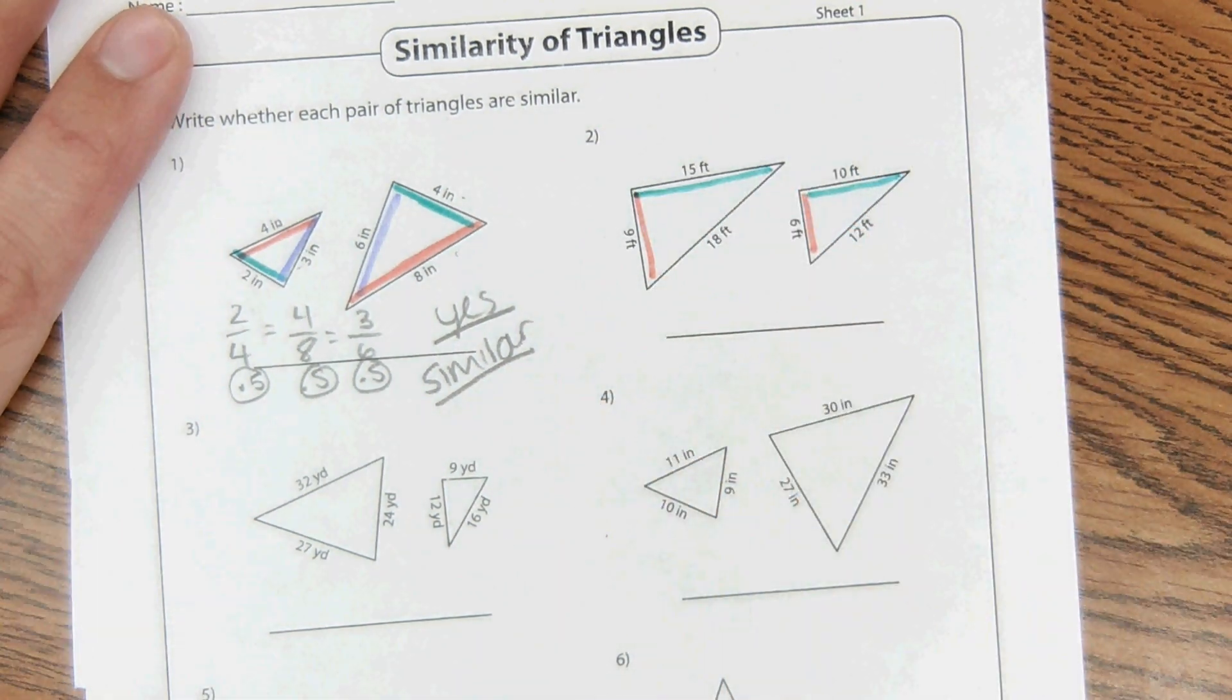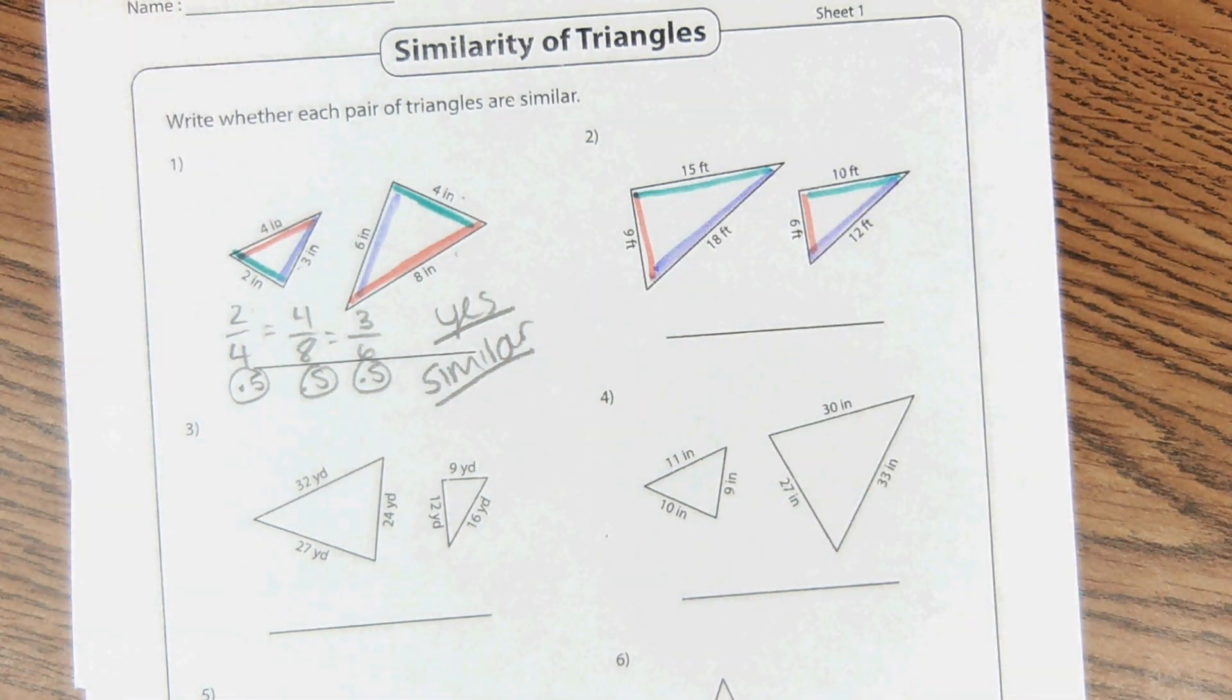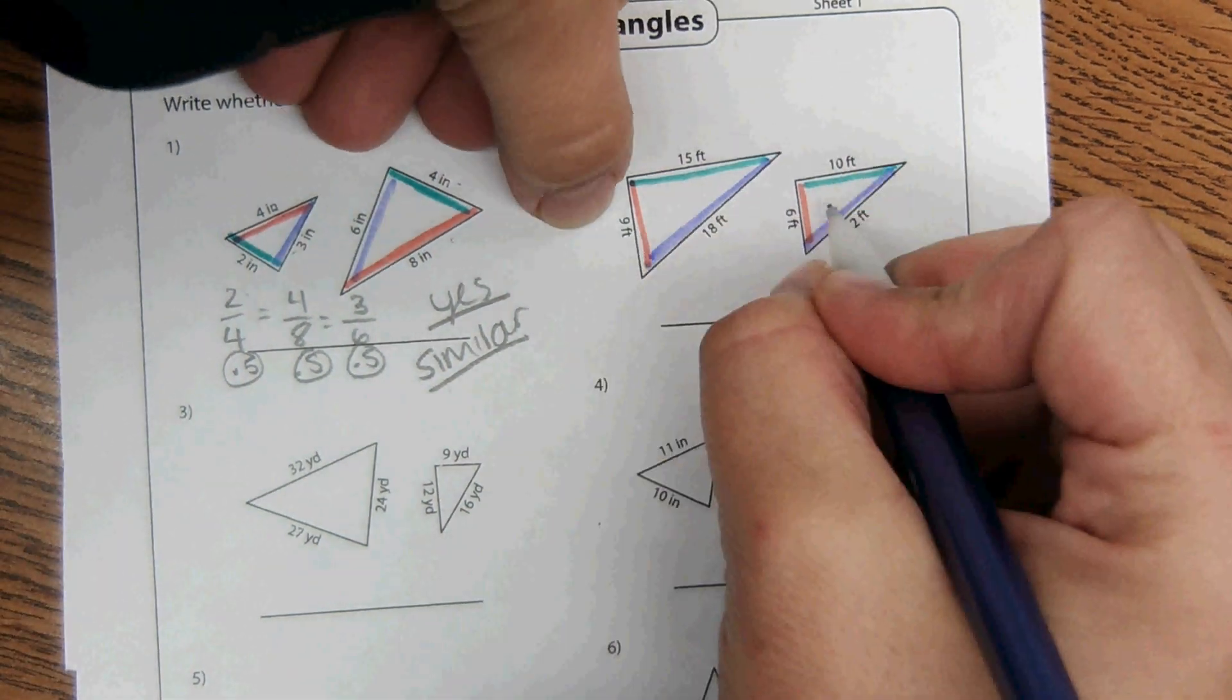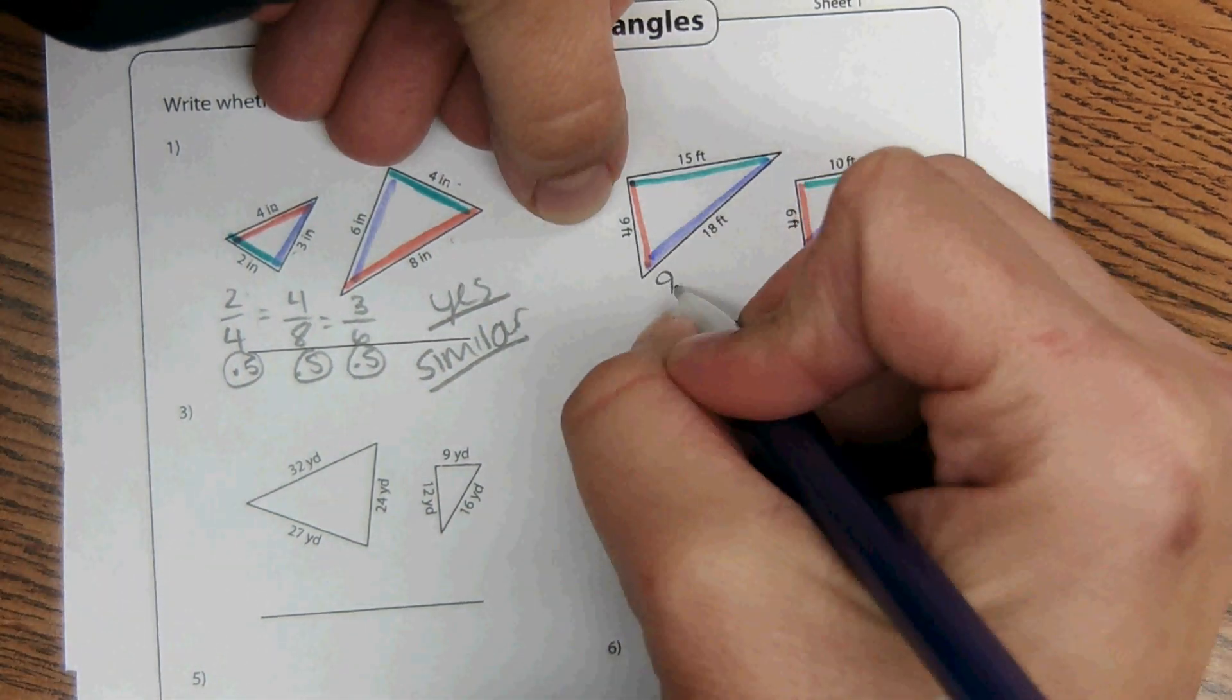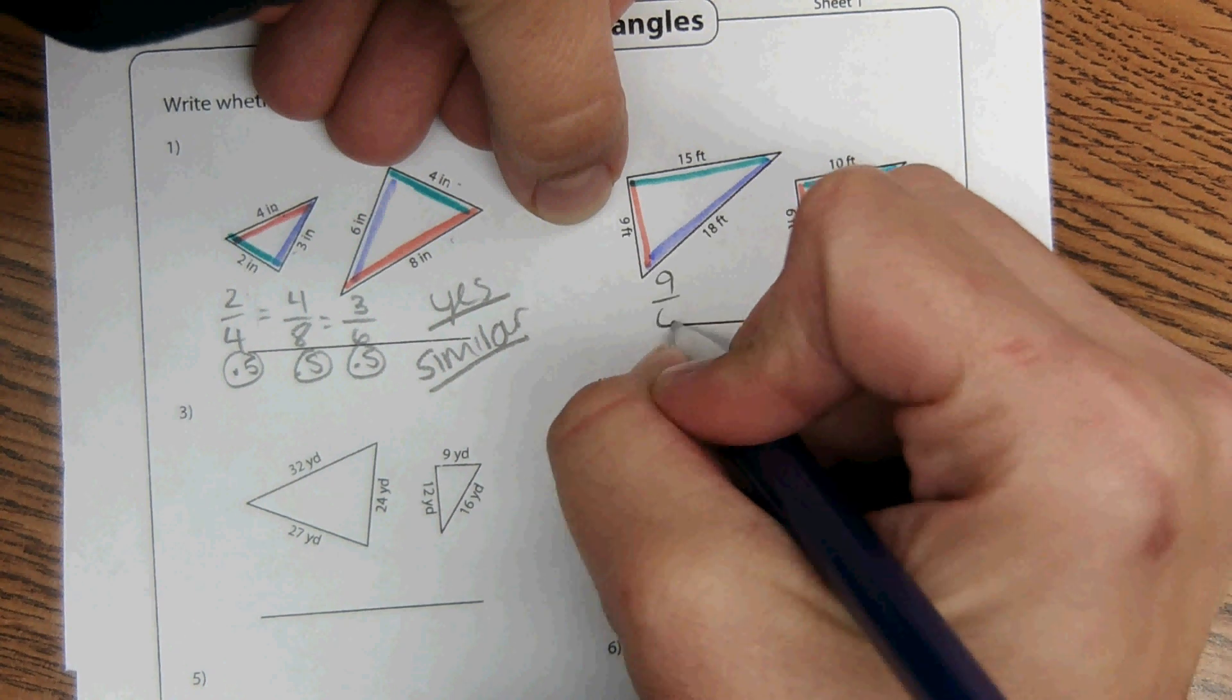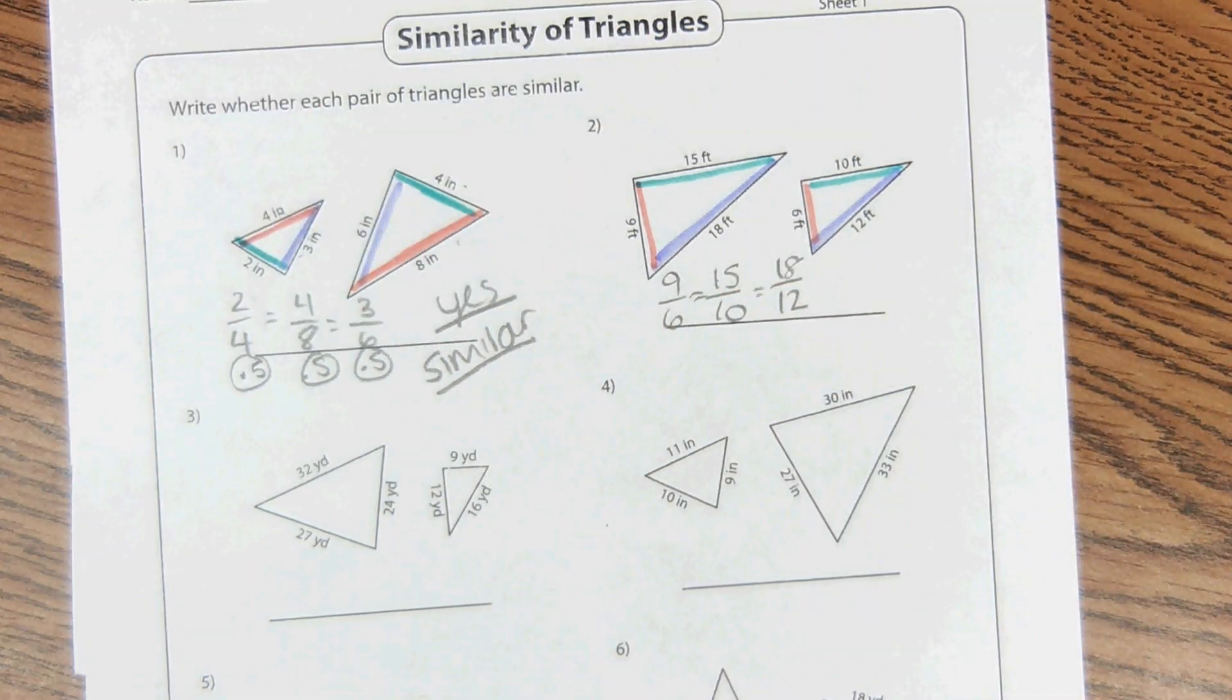Okay, so now we're going to repeat that process. So first thing we need to do is identify corresponding parts. So this corresponds with this side. This corresponds with this. And then the longest side corresponds with the longest side. And then I'm going to set up my ratios, like orange to orange, teal to teal, and purple to purple.